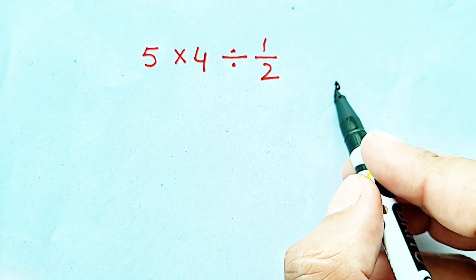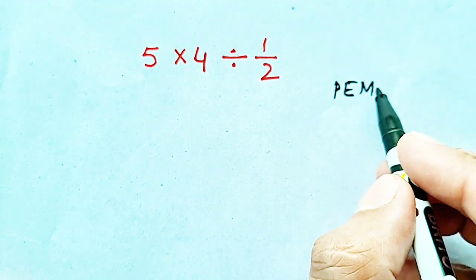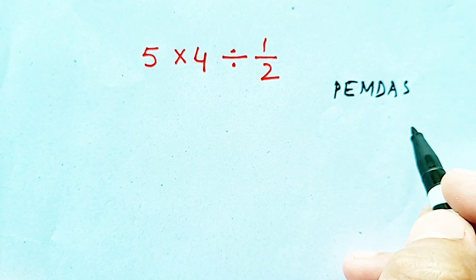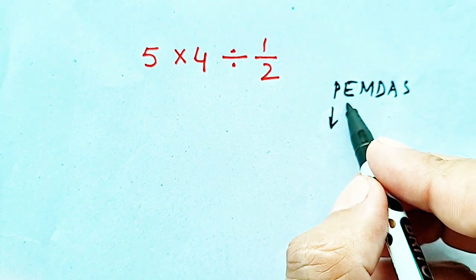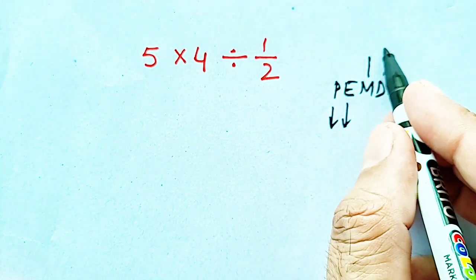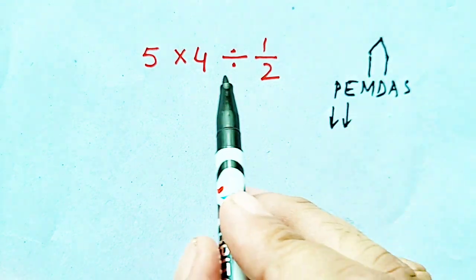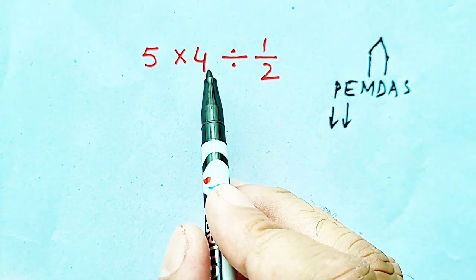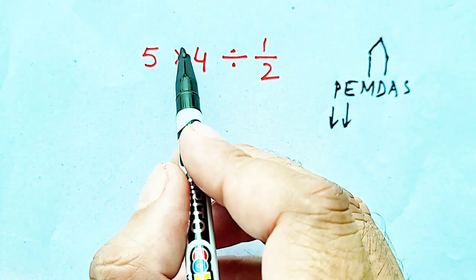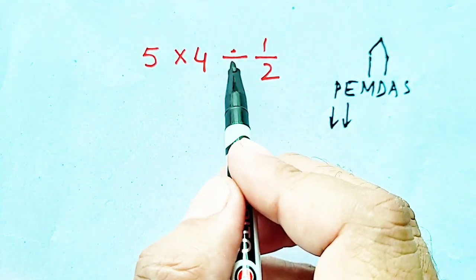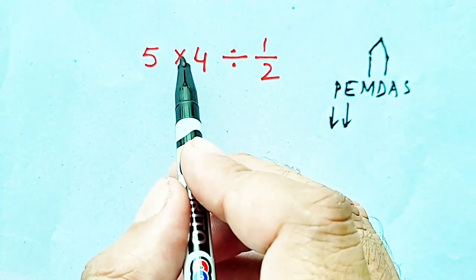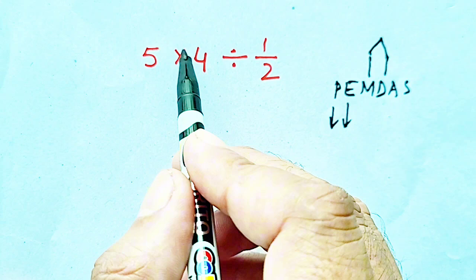have to follow the PEMDAS rule. Now what is PEMDAS? Parentheses, exponents, multiplication, division. Now multiplication and division are involved, so multiplication is at left and division is at right, so first of all we have to perform the operation which